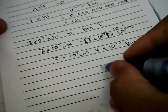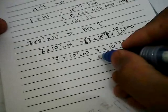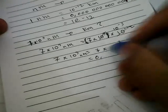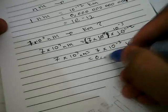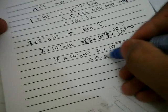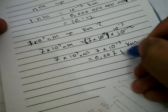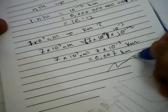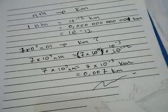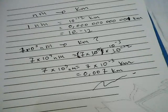Or written another way in decimal form, that is 0.007 kilometers. That is the result of our example equation. Thank you for watching, goodbye.